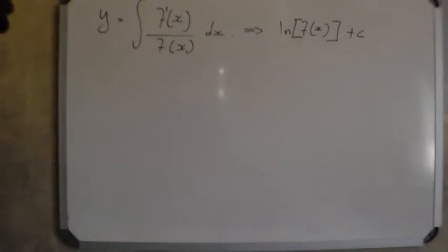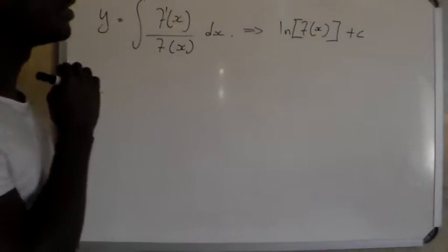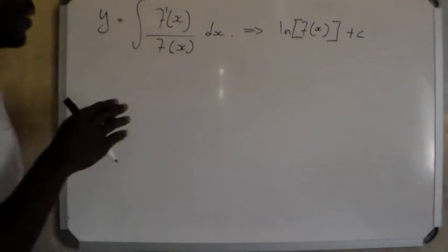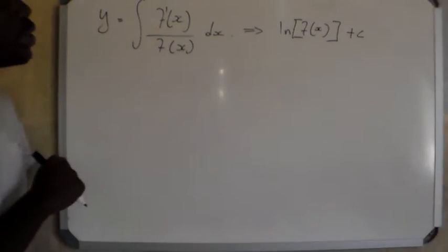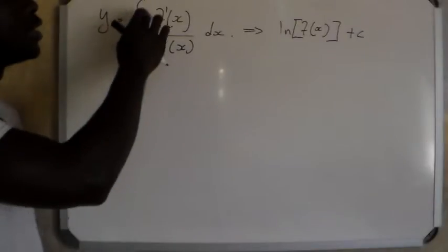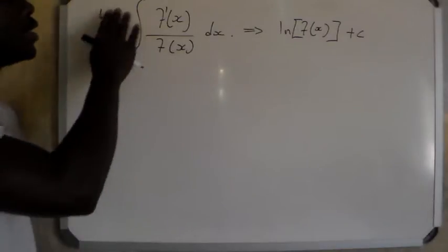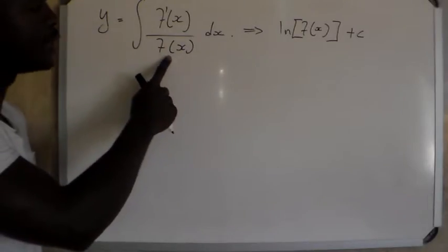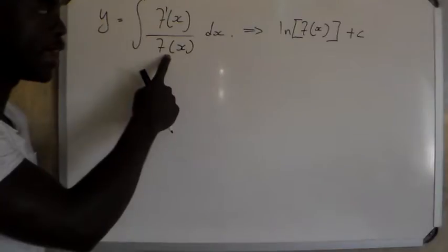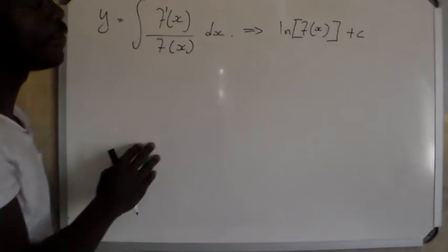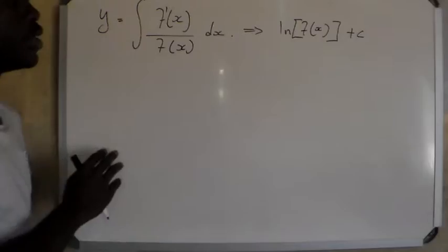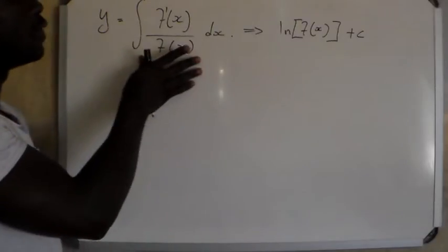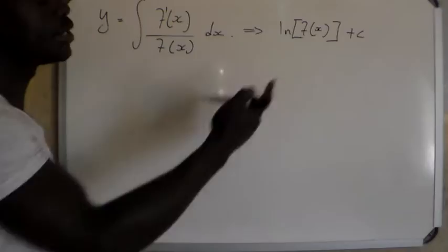Today we're going to look at types of integration. So I'm going to start with the first type. When you do the integration of the derivative of f(x) divided by f(x), the integral of f'(x) divided by f(x) is equal to ln|f(x)| plus c. So the integral of this form equals this result.